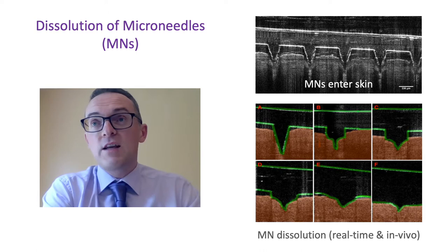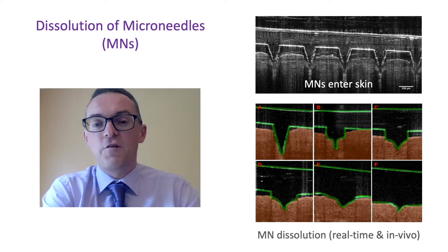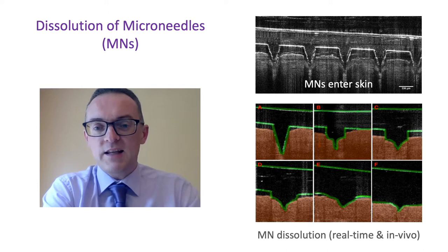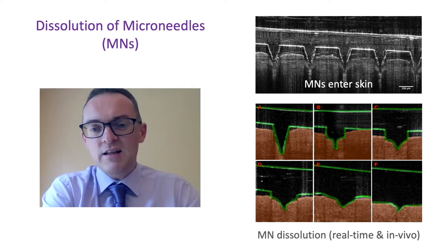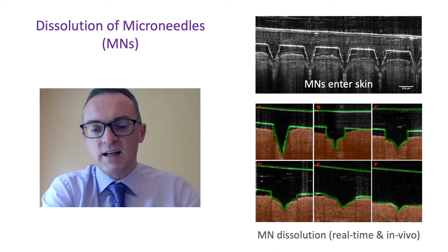For immediate absorption, we include a water-soluble drug form in the microneedles. For sustained absorption, we use a particulate controlled-release system in the skin. Alternatively, we can place a vaccine — an antigen, a virus-like particle, or a nanoparticle decorated with an antigen — in the microneedle. It dissolves and deposits the vaccine agent in the viable skin layers where it contacts professional antigen-presenting cells.